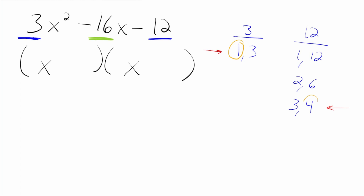Next we're going to use those same two pairs but reverse what we multiply. So this time we multiply 1 and 4, getting us 4, and we multiply 3 and 3, getting us 9. Again we add and subtract those two numbers to see which one gets us 16. So 9 plus 4 is equal to 13 — not 16. And 9 minus 4 is equal to 5 — also not 16.